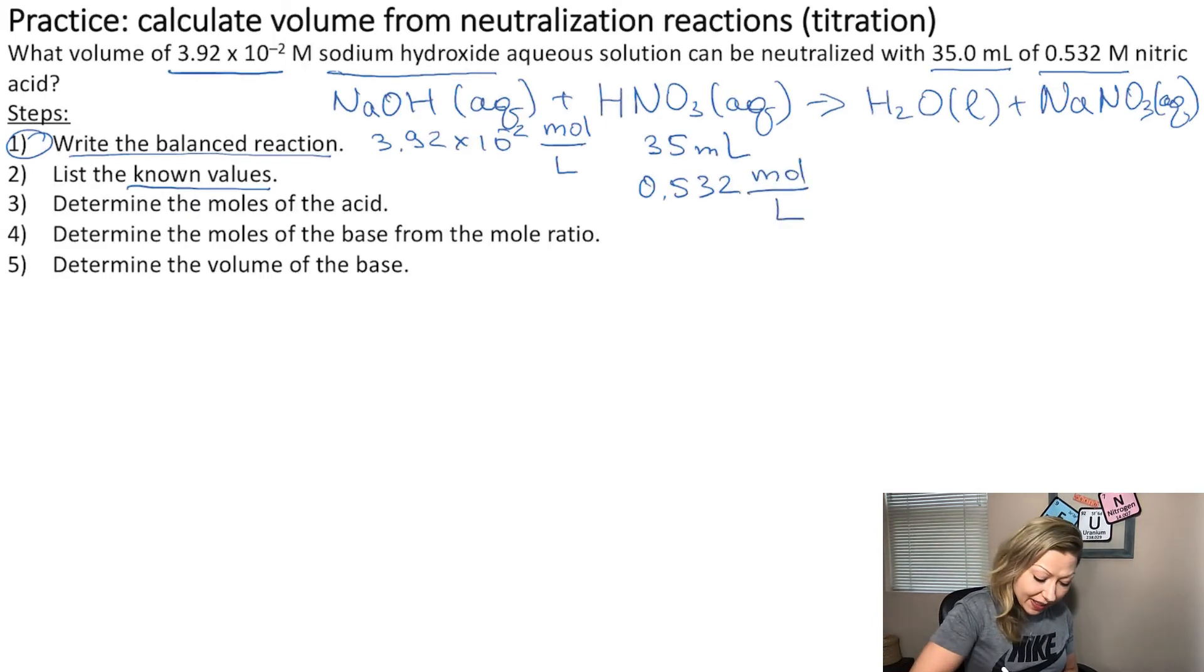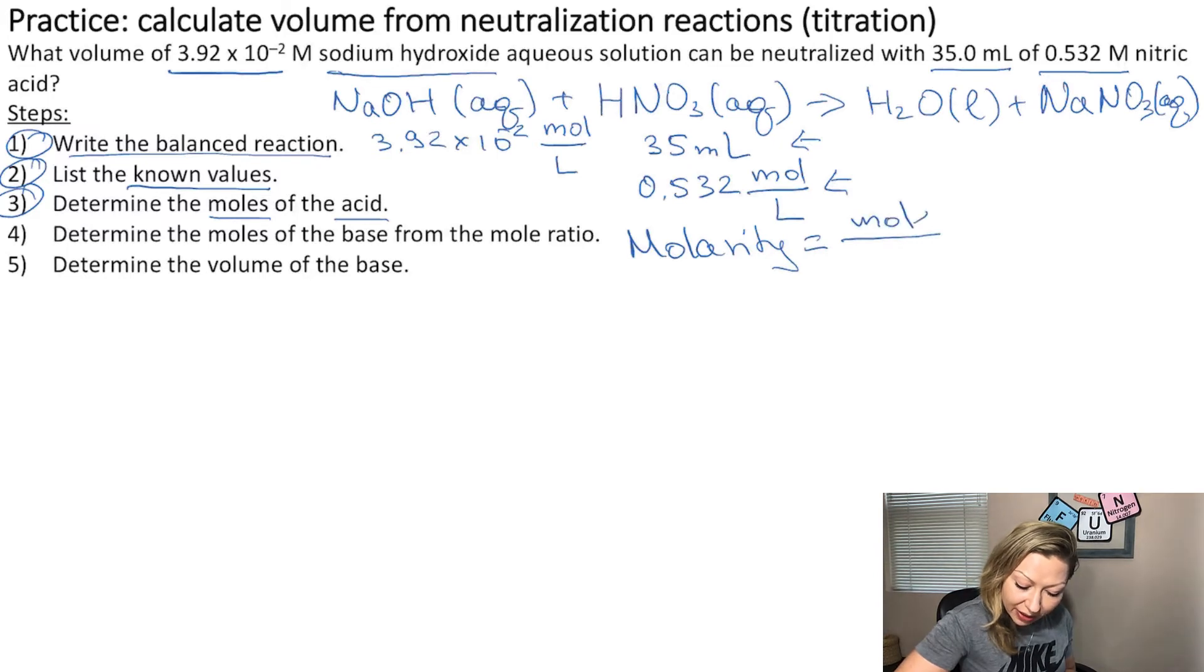What is step number three? We have to determine the moles of the acid. Well, we are given the volume and the molarity. So we know that the molarity is calculated by the moles divided by the liters of the solution. From here, we can simply calculate the moles of the acid by knowing the volume and the molarity.